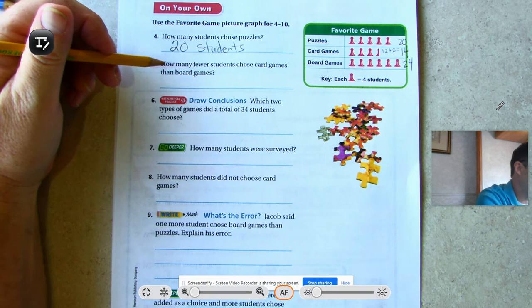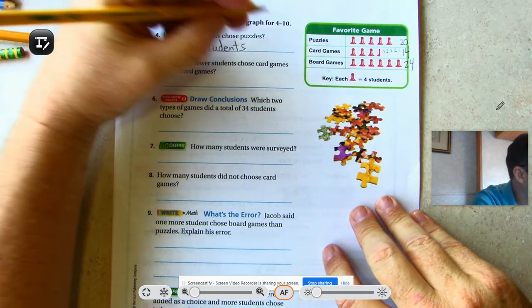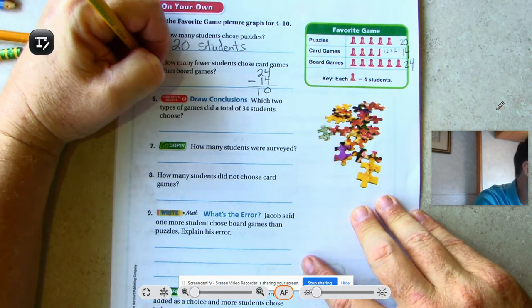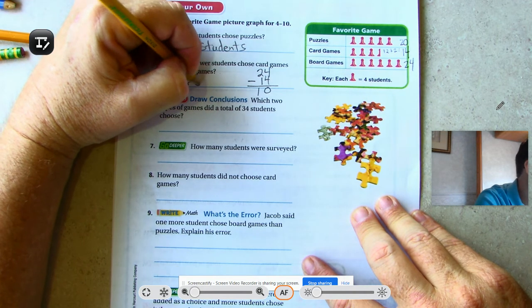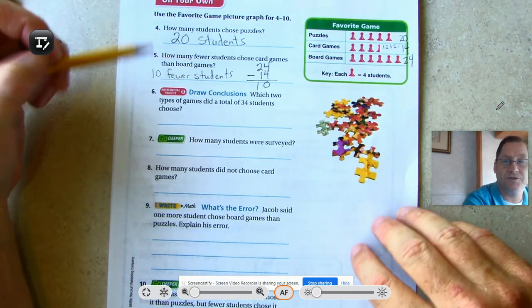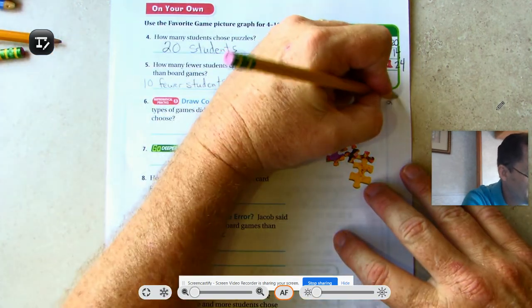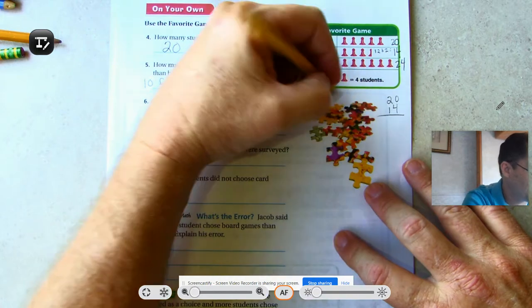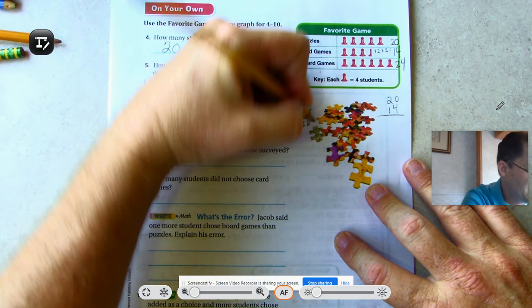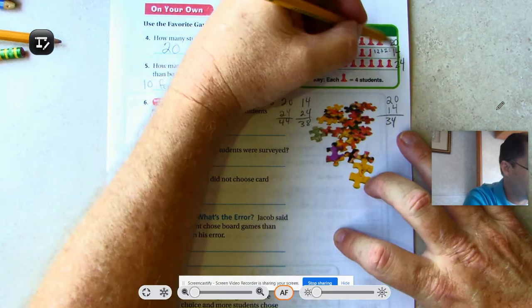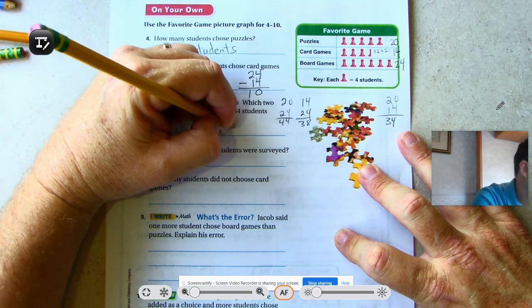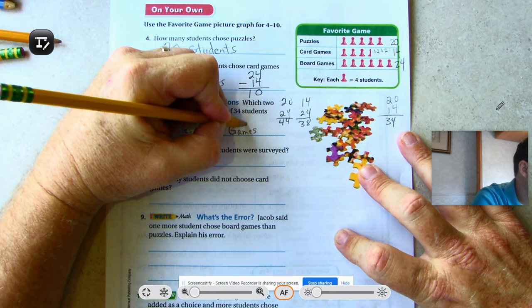How many fewer students chose card games than board games? Twenty-four students chose board games, 14 chose card games. So ten fewer students. Which two types of games did a total of thirty-four students choose? We have 20 and 14, 14 and 24, and 20 and 24. That's 34, 38, 44. So 34 would be puzzles and card games.